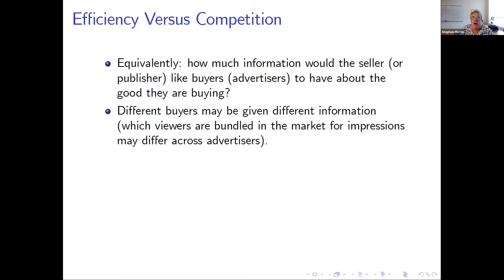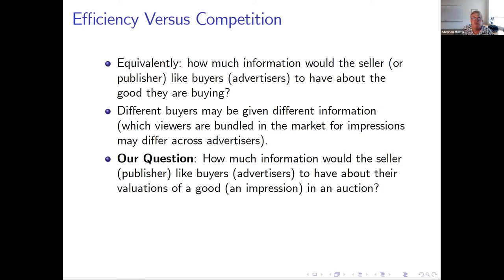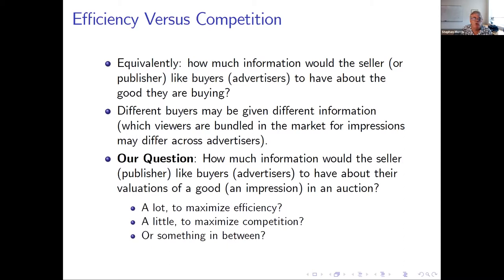You can talk about this as if there's a common good being sold, but when you have different buyers, they can be given different information in this trade-off. So which viewers are bundled for which advertiser may differ — you can vary who gets pooled for different advertisers. Our question is: how much information would the seller like the buyers to have about their valuations of a good in an auction? A lot to maximize efficiency, a little to maximize competition, or something in between.